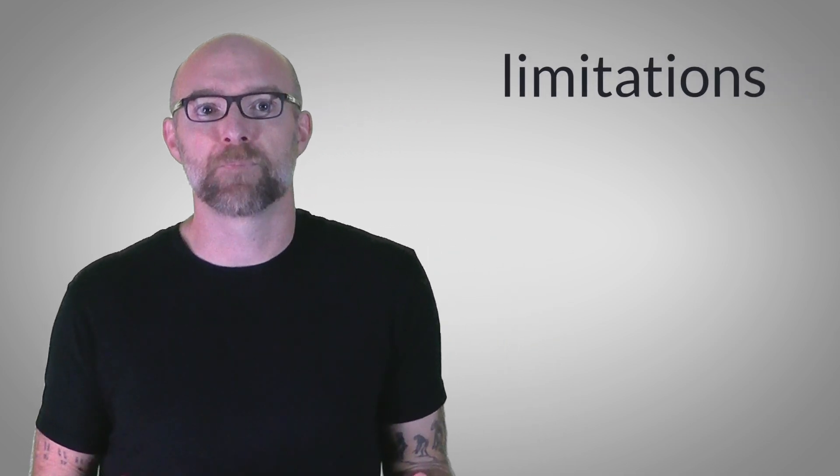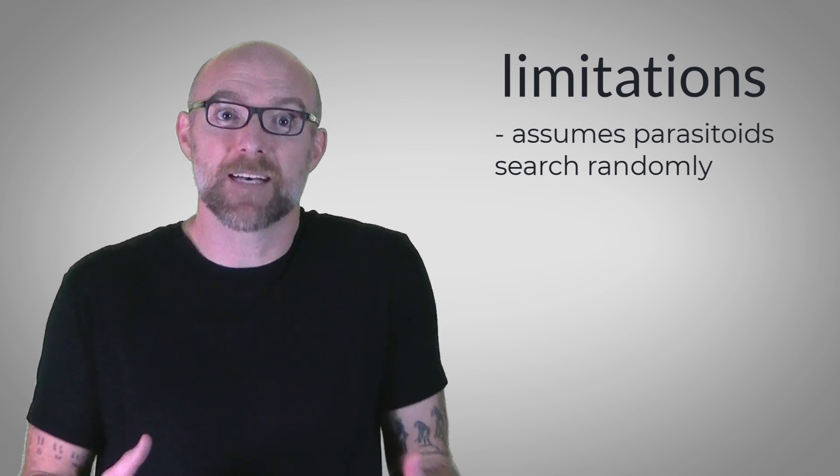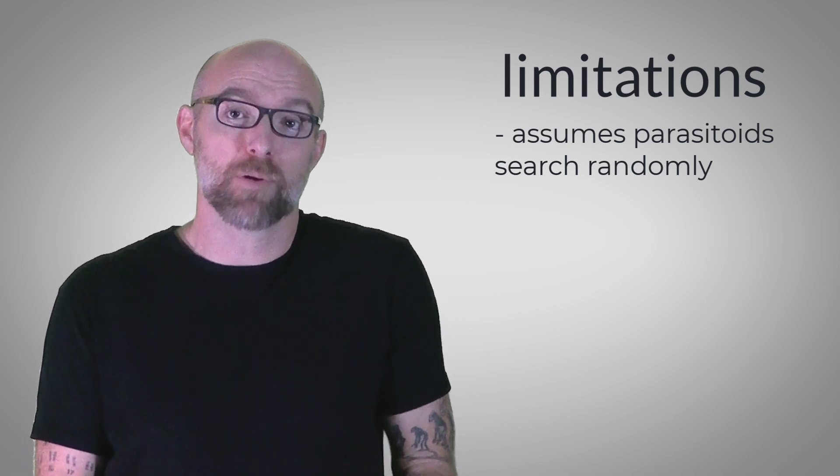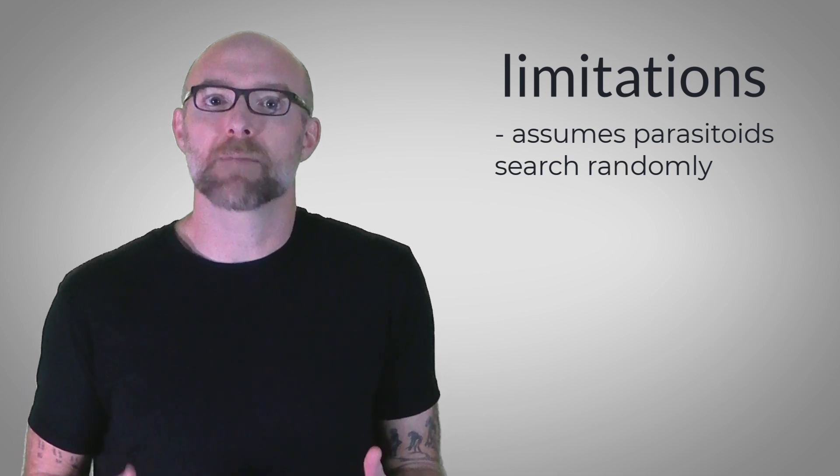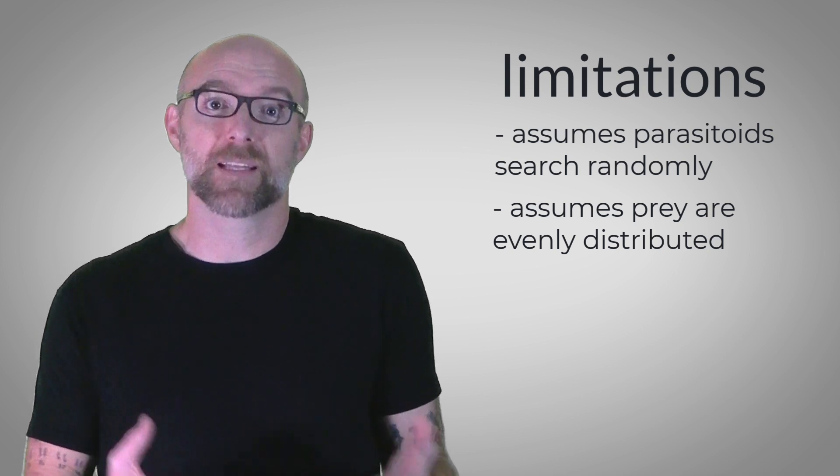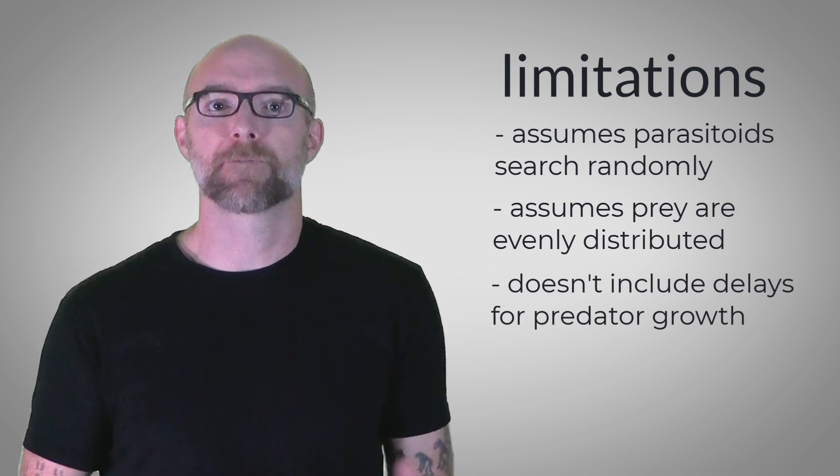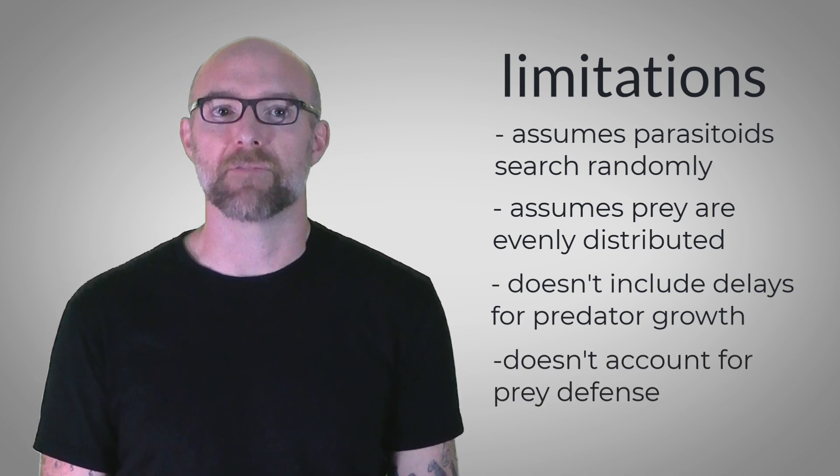There are other limitations of this model. For example, it assumes that parasitoids will search randomly, which isn't entirely accurate. But it does allow us to predict their use of prey using that standard function. It also assumes that prey are evenly distributed across the landscape. It doesn't account for delays in predator response due to predator growth or predator satiation, nor does it account for prey defenses or cryptic behavior.